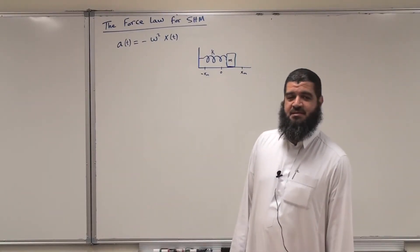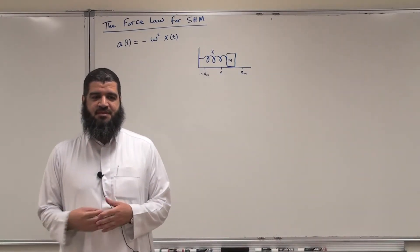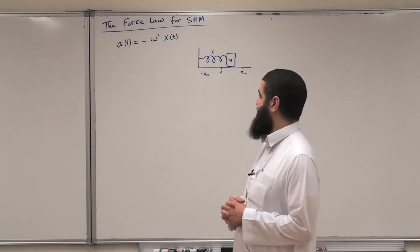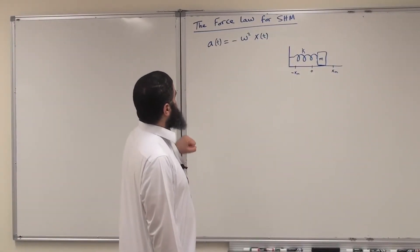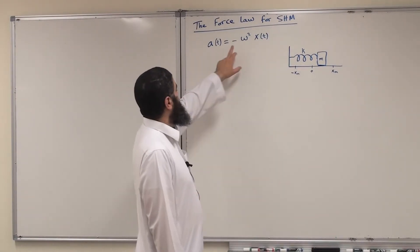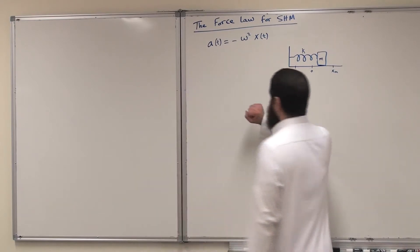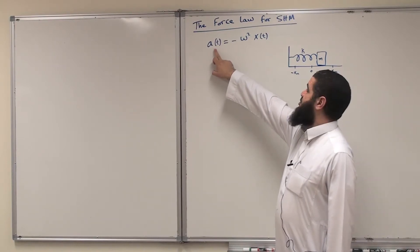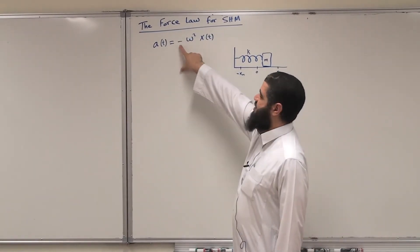Bismillah ar-Rahman ar-Rahim. Let us now discuss the dynamics of oscillation. Previously we discussed the kinematics — the position, velocity, acceleration — and we have seen the relations between each one of them. Now, let me start from the last point we have seen earlier, which is the acceleration as a function of time for simple harmonic motion, equals minus omega squared x of t. We can see that the acceleration for simple harmonic motion is proportional to the displacement of the oscillating particle, but with opposite sign.